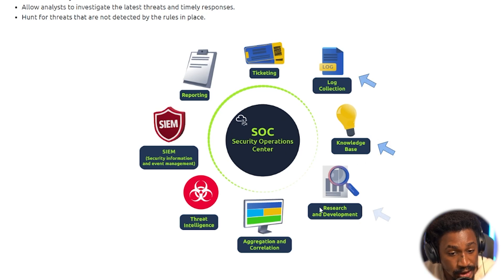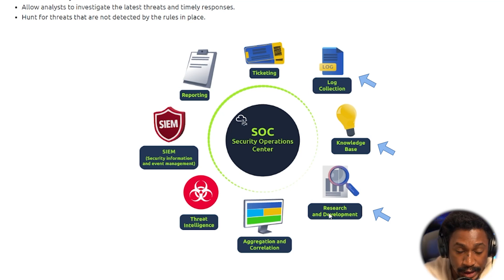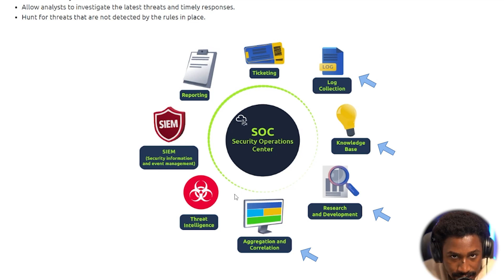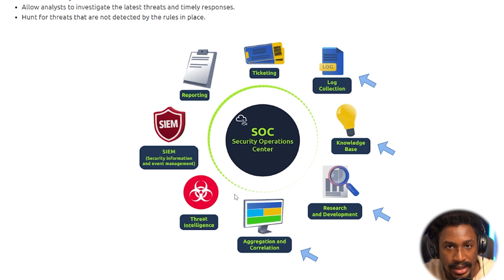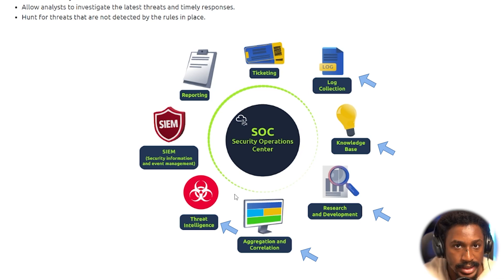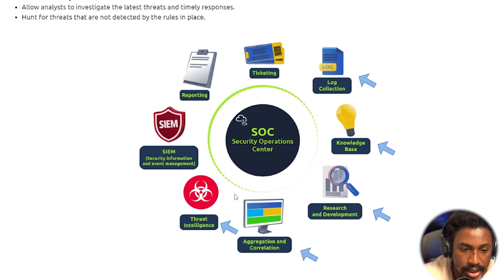There's a diagram showing a cycle of things that happen within the security operations center. First you have log collection, then a knowledge base, then research and development — where you research how threats happen and feed that back into your SIEM as detection rules. Next you have aggregation and correlation, where different data points are brought together to create a story about an attack. Then you have threat intelligence, which involves leveraging knowledge of attacker activity — like IP or domain reputation — and applying it to your SIEM.